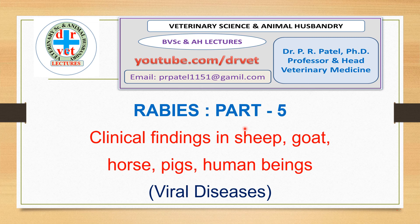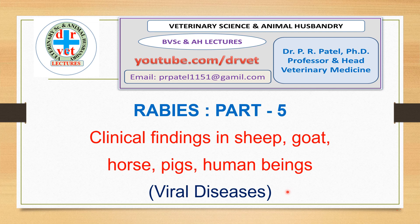Hello friends, welcome to our Dr. Wait channel. I'm Dr. PR Patel, professor and head of veterinary medicine. In this presentation we will see rabies part 5, covering clinical findings in sheep, goat, horse, pig, and human beings. This is a very important viral disease from the animal point of view, owner point of view, and clinical examination point of view.